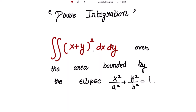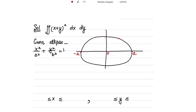We need to evaluate the double integral of (x + y)² dx dy over the area bounded by the ellipse x²/a² + y²/b² = 1. The ellipse is drawn and the points negative a and positive a are on the ellipse. Taking the limits for x as constants, that is negative a and positive a, so x₁ = -a and x₂ = a.